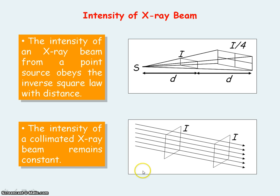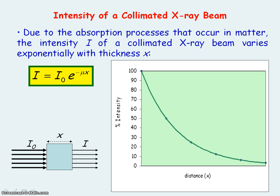For a collimated X-ray beam — a parallel beam of X-rays — the intensity will remain constant if in air. However, due to the fact that X-rays interact with matter, the intensity of a collimated X-ray beam varies exponentially with the thickness of the matter.